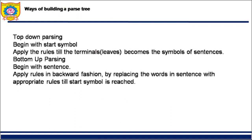In bottom-up parsing, you begin with the sentence and apply the rules in backward fashion, replacing words with appropriate rules until you reach the start symbol. The choice between these two approaches is similar to the choice between forward and backward reasoning. There is also a combined technique called bottom-up parsing with top-down filtering. At every stage a rule is applied, generating a tree structure.